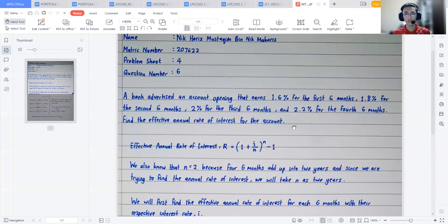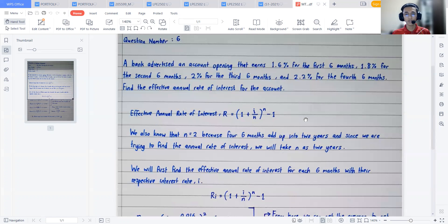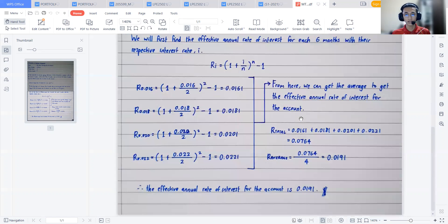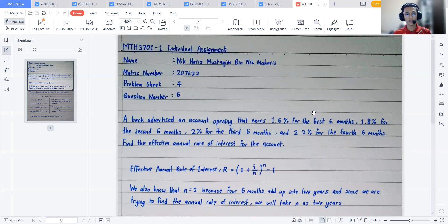With that, I have managed to successfully find and finish the question in particular. I think that is all from me. Again, my name is Nick Harris Mustaakim bin Maharis, my matric number is 207622, this is my individual assignment video for MTH 3701 Group 1, and the problem that was given to me was problem sheet 4 question number 6. Thank you very much for watching, I'll see you guys in the future. Thank you very much.